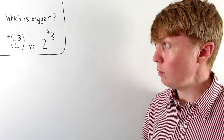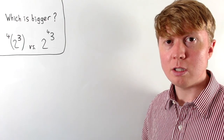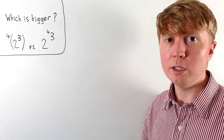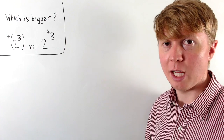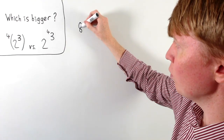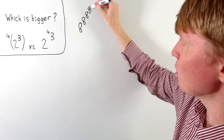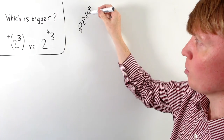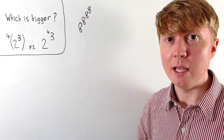Instead of doing eight to the power of four, we're doing repeated exponentiation rather than repeated multiplication. So written out, it would look like eight to the power of eight to the power of eight to the power of eight.